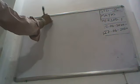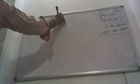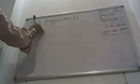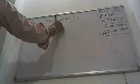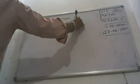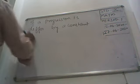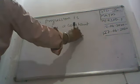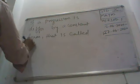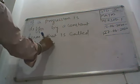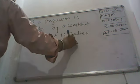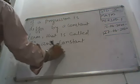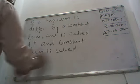If a progression is differed by a constant, constant term, that is called AP. And constant term is called only common difference.